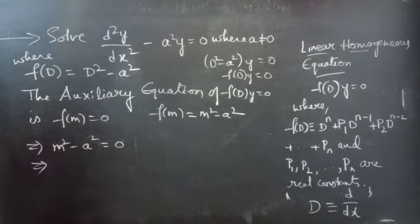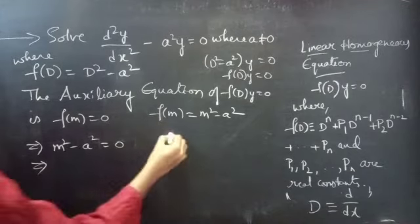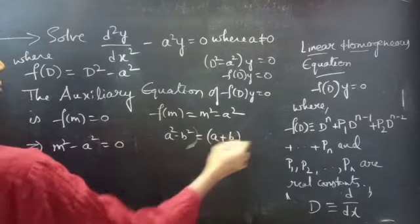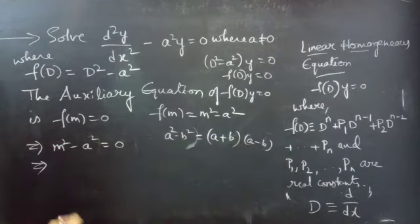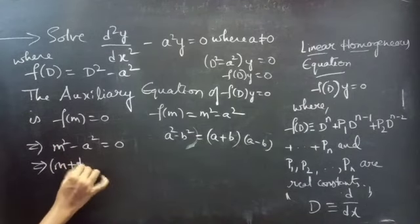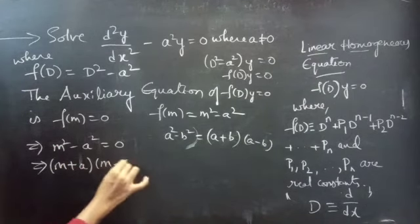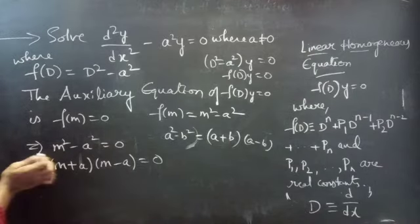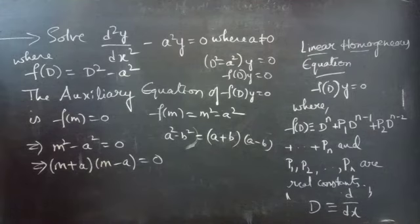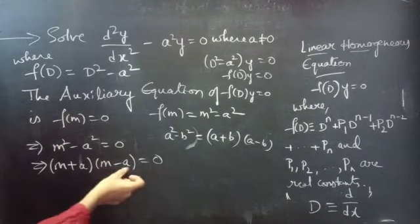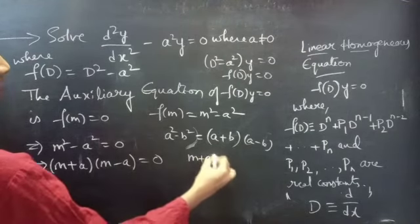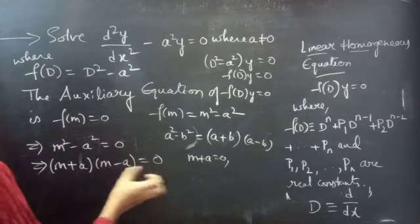Now we need to find the roots. We know that a² minus b² equals (a + b)(a − b), so m² − a² factors as (m + a)(m − a) equals zero. Setting each factor to zero: m + a = 0 and m − a = 0.